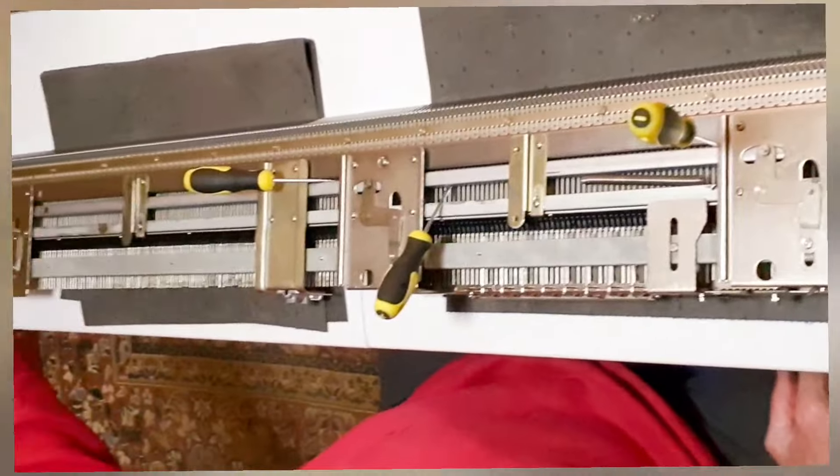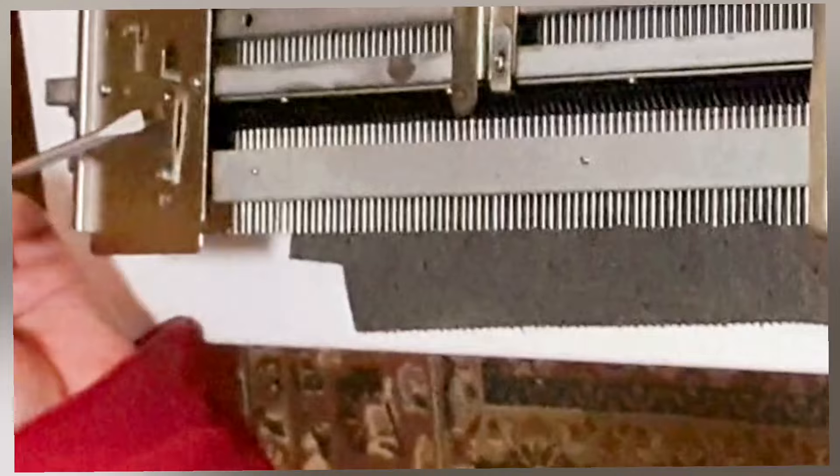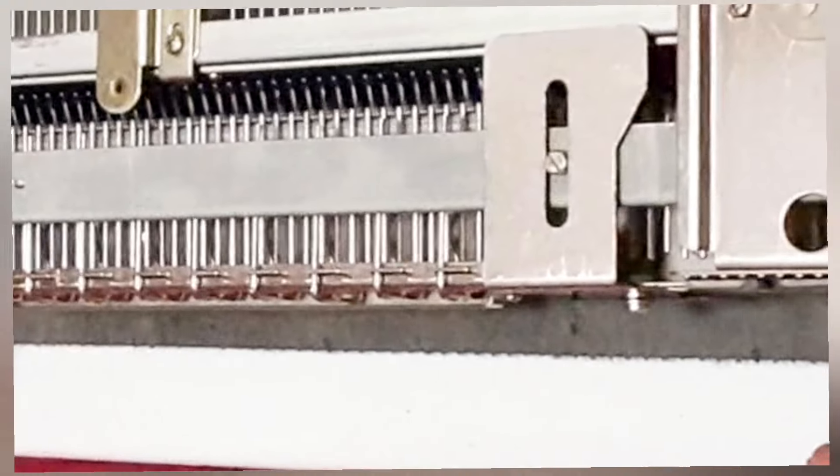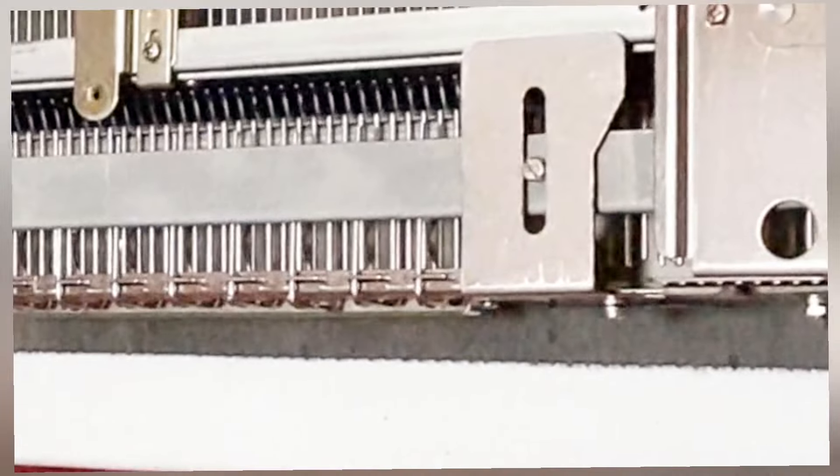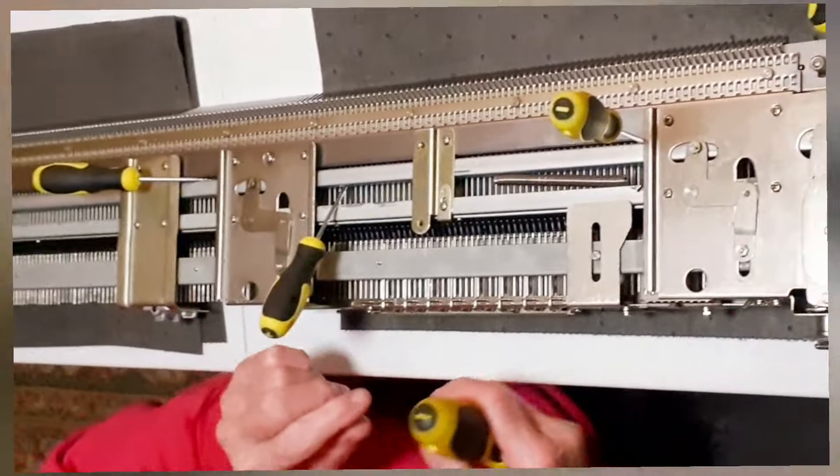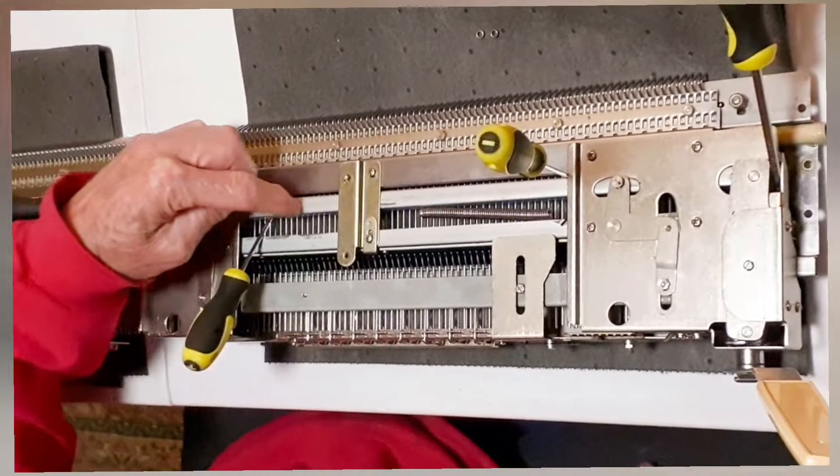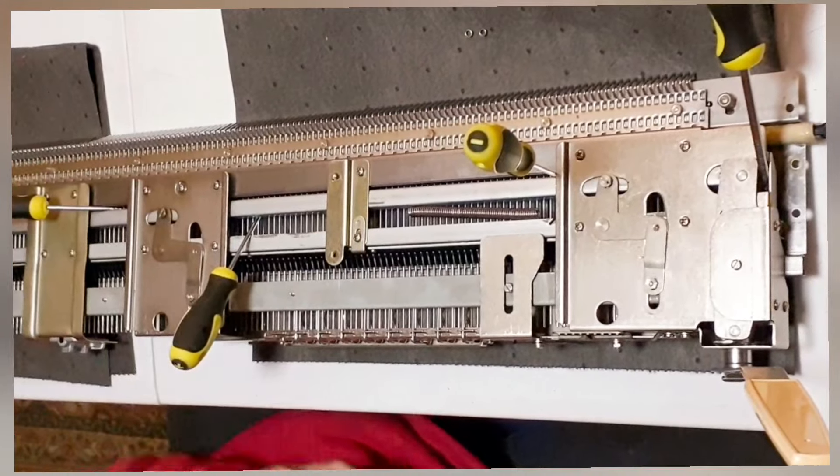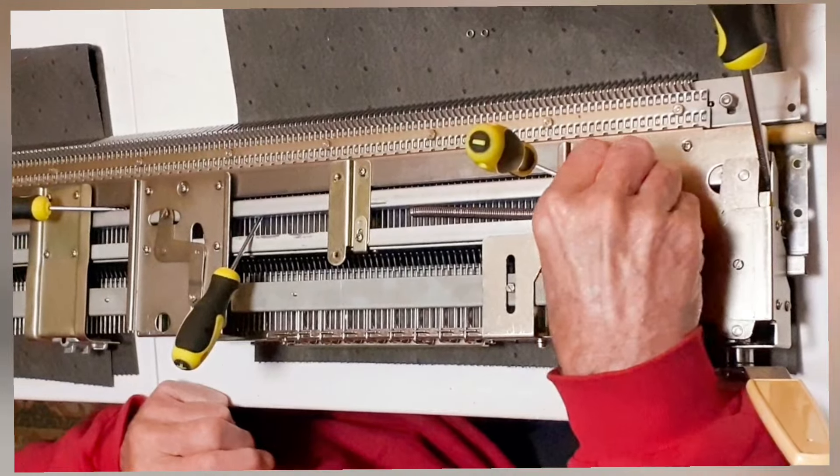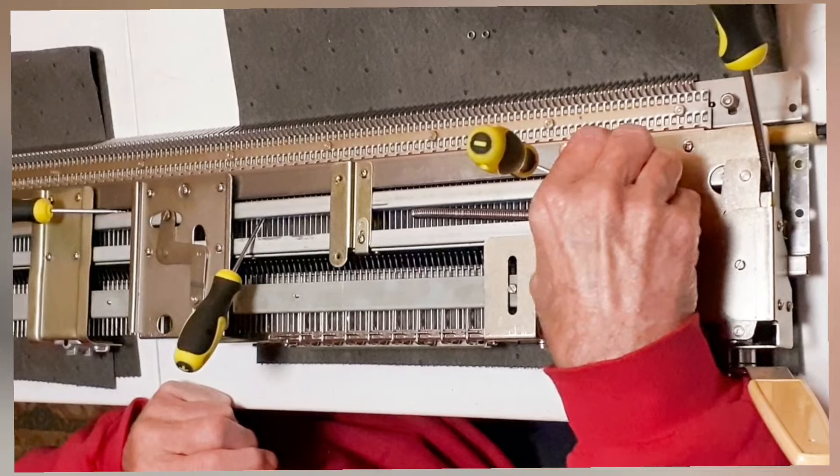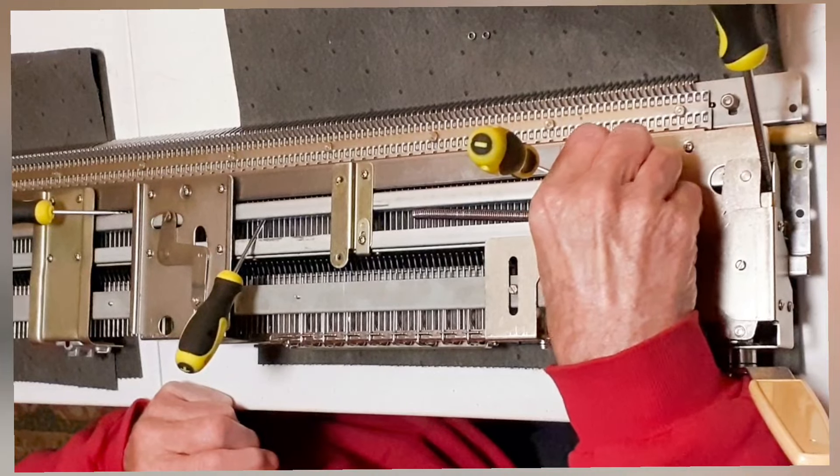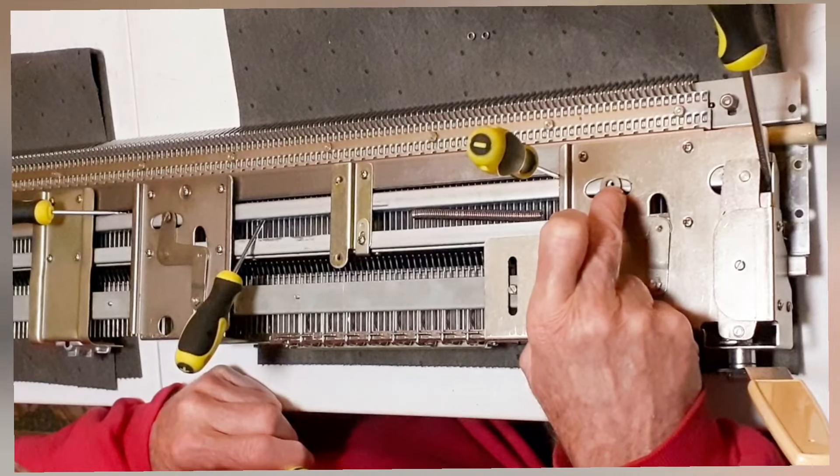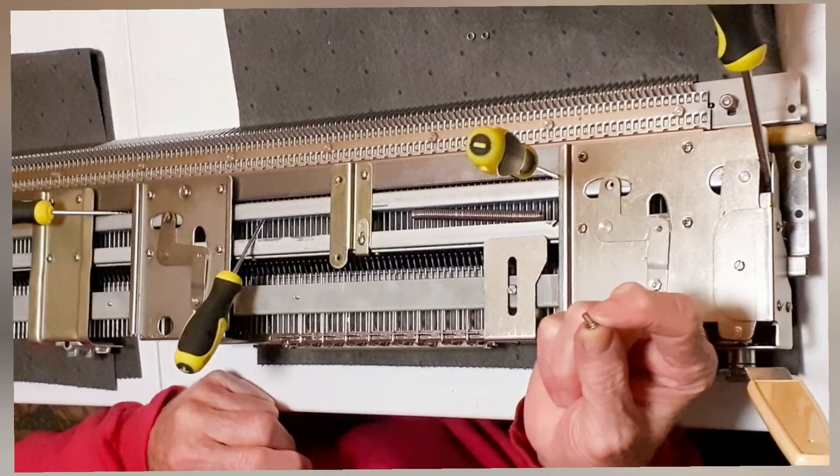They're not absolutely identical because this is an anchor spot on this end and this is the activating spot on this end. But what I've got is all my little screwdrivers holding this rod up and separating it there and there. The reason is so I can get these screws out and back in again. See underneath here is a threaded boss that this screw goes into.